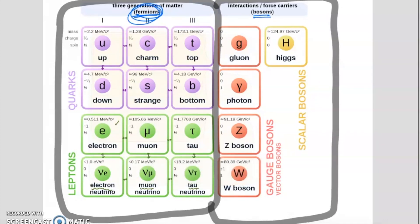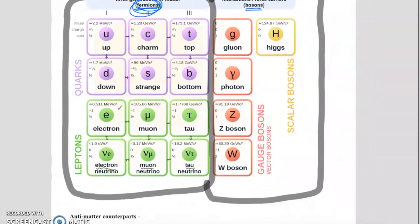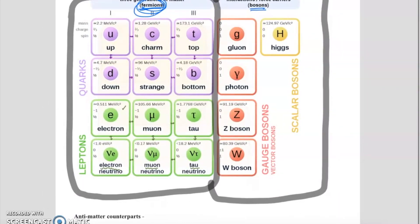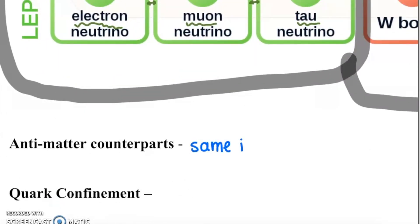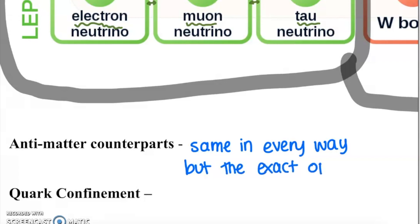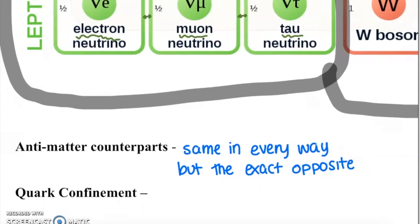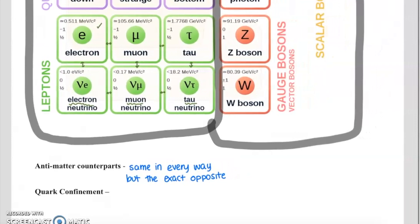For each of our fermions — each quark and lepton — there are antimatter counterparts. An up quark has an anti-up quark; a charm quark has an anti-charm quark. An electron has an anti-electron, a muon has an anti-muon, and so on. The antimatter versions are the same in every way but the exact opposite. For example, an electron has a charge of negative one, so an anti-electron has a charge of positive one. Take all properties and make them opposites.